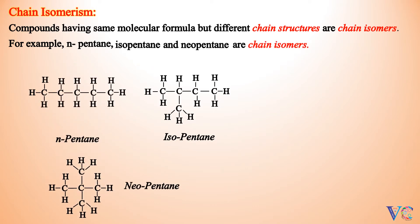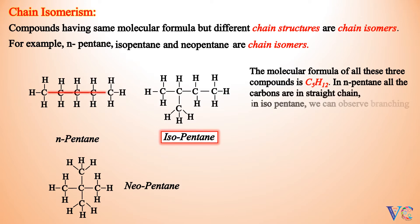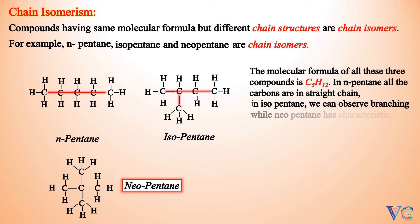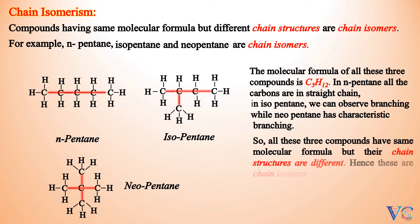The molecular formula of all three compounds is C5H12. In Pentane, all the carbons are in a straight chain. In Isopentane, we can observe branching. While Neopentane has characteristic branching. So all three compounds have the same molecular formula but their chain structures are different. Hence these are Chain Isomers.